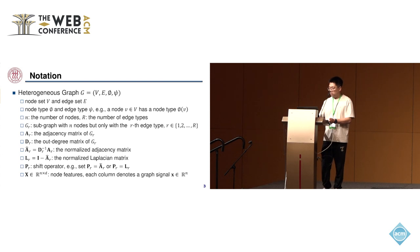First, I would like to introduce some of the notations. We use G to denote a heterogeneous graph with a node set V and an edge set E. Each node has a node type phi, and each edge has an edge type psi. We use lowercase n to denote the number of nodes and uppercase R to denote the number of edge types. Following previous work, we use G_r to denote the subgraph with N nodes but only with the r-th edge type. We use A_r to denote the adjacency matrix of this subgraph G_r, and D_r to denote its out-degree matrix. We use hat A_r to denote the normalized adjacency matrix, and tilde A_r to denote the normalized Laplacian matrix.